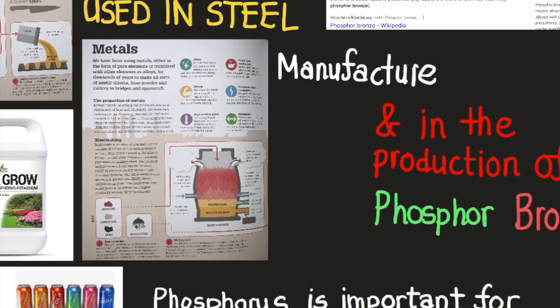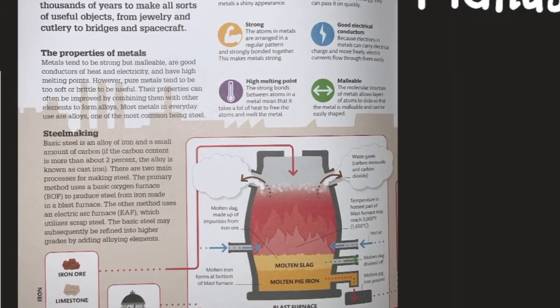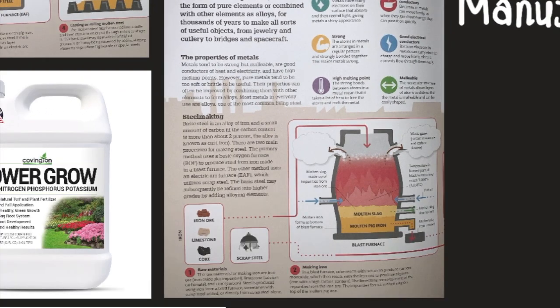So phosphorus is used in the production of various metals. Here we have a page from a book. Metals are constructed in various ways, especially today. We have been using metals either in the form of pure elements or combined with other elements as alloys for thousands of years to make all sorts of useful objects — from jewelry and cutlery to bridges and spacecraft.